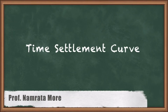Hello everyone. In this video we are going to discuss the time-settlement curve from the chapter on consolidation of soils. So till now we have discussed how a soil sample extracted from the field and tested in the laboratory will behave under static loading — how its compression takes place with progress in time when subjected to static steady loading. But the results obtained from this test cannot be used directly in the field, because there is a difference between field and laboratory conditions. These differences we are going to discuss in this video.